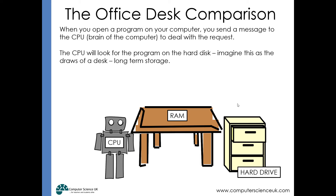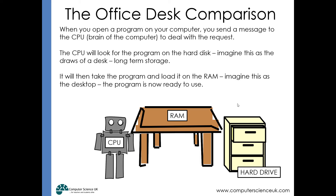The problem is that as an office worker you can't work on documents by leaning into a drawer and scribbling notes — it takes too long and it's uncomfortable. So the office worker takes the document and places it on the table. In the same way, the CPU takes the program from the hard drive and puts it onto the RAM — just like the office worker places the document on their desktop so they can start working on it at speed.